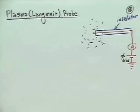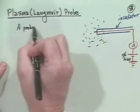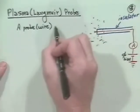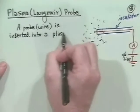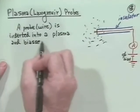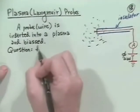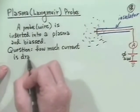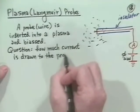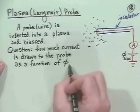So we'll plot this as a function of phi, by which we mean phi bias. As a function of that bias potential, what actually do we get as the current flowing into this external circuit? So a probe or wire, shielded wire, is inserted into a plasma and biased. The question we want to address is, how much current is drawn to the probe as a function of the potential that we apply? Phi equals phi bias potential.